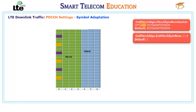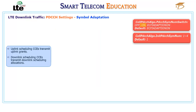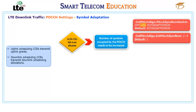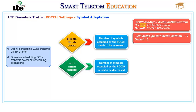When the parameter is set to ON, PDCCH symbol adaptation is enabled and CCE usage is measured to check whether CCEs are sufficient. CCEs are allocated in uplink and downlink for scheduling. If uplink or downlink CCEs fail to be allocated within the previous TTI, CCEs are insufficient and the number of symbols needs to be increased. If no CCE allocation failure occurs within a certain period and remaining CCEs are sufficient, the number of symbols needs to be decreased.